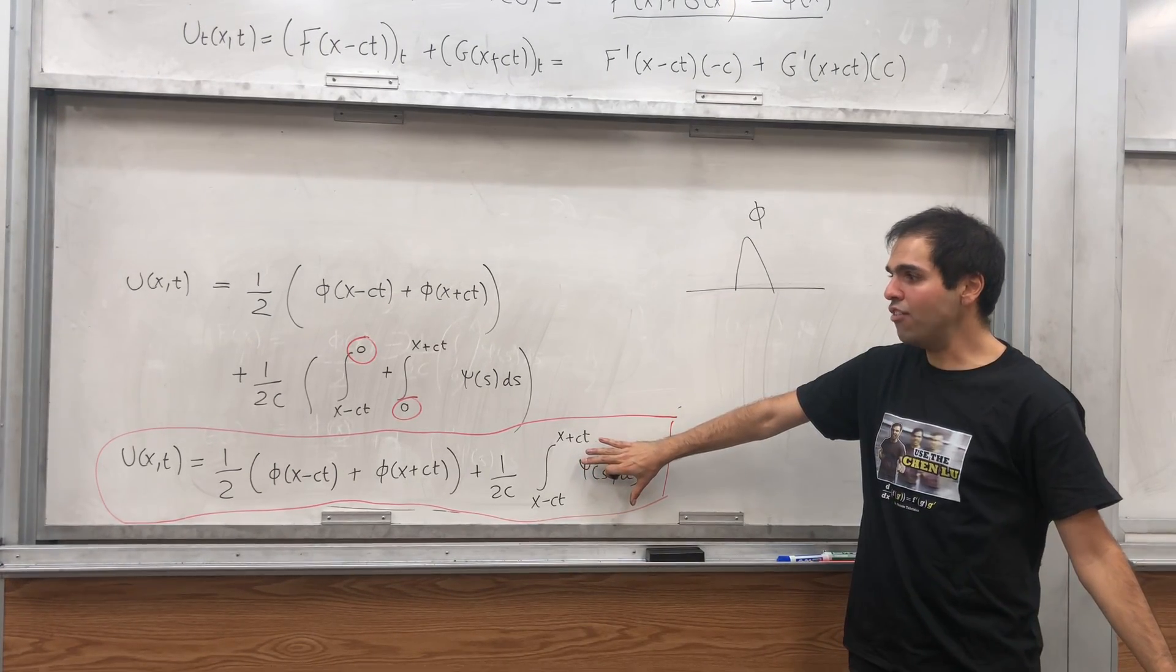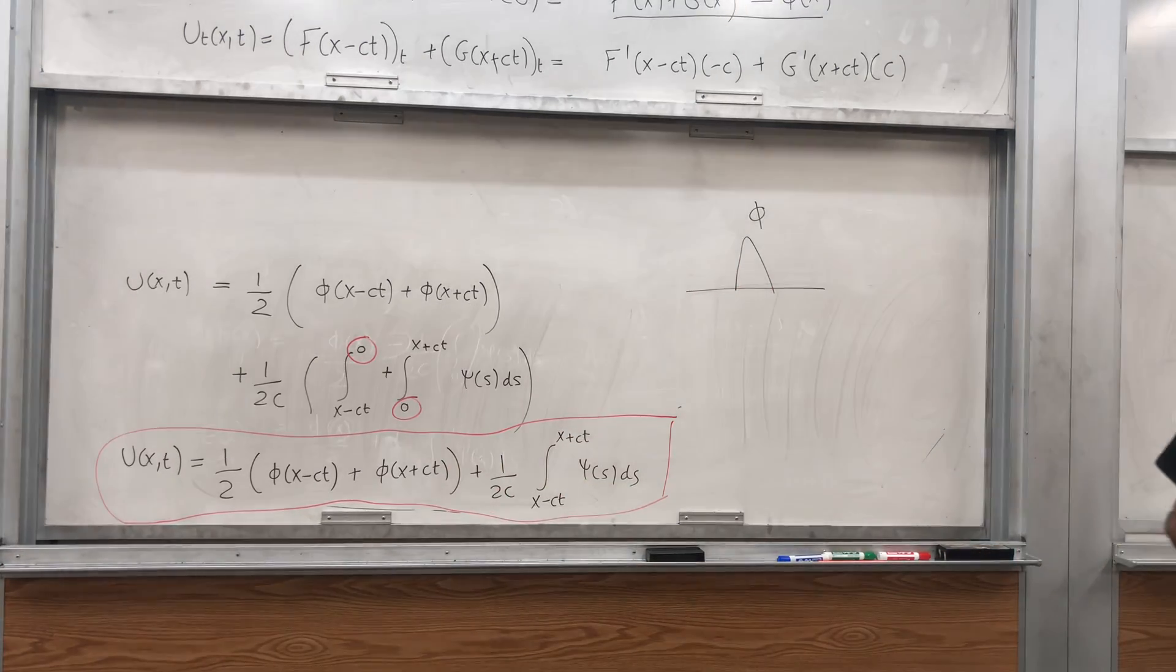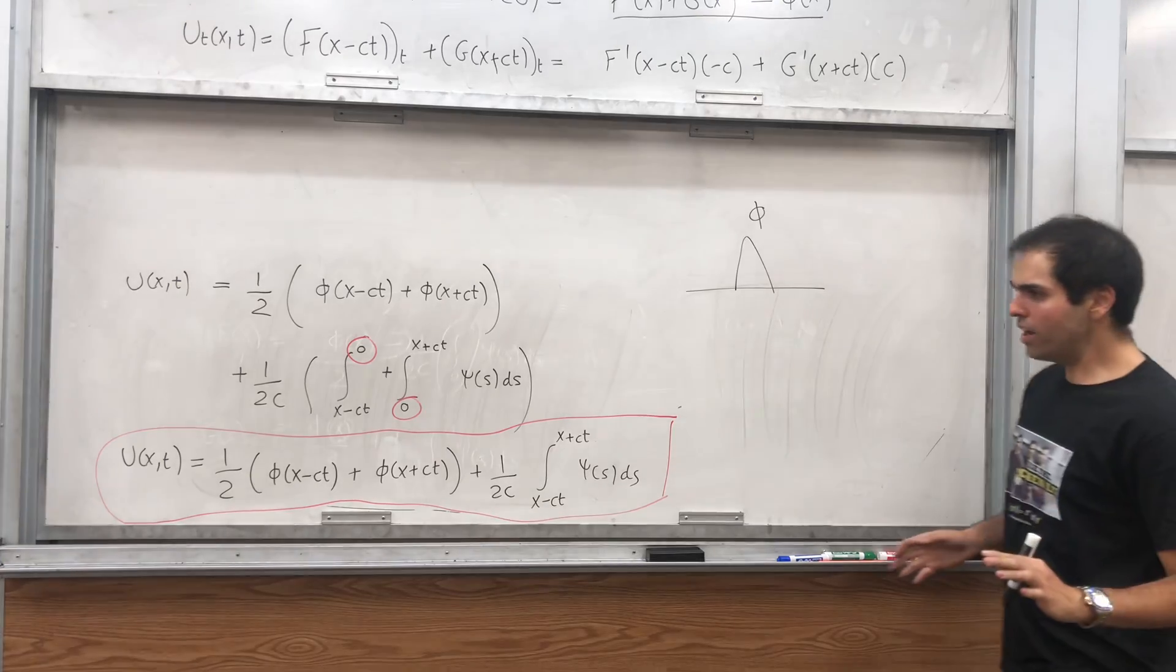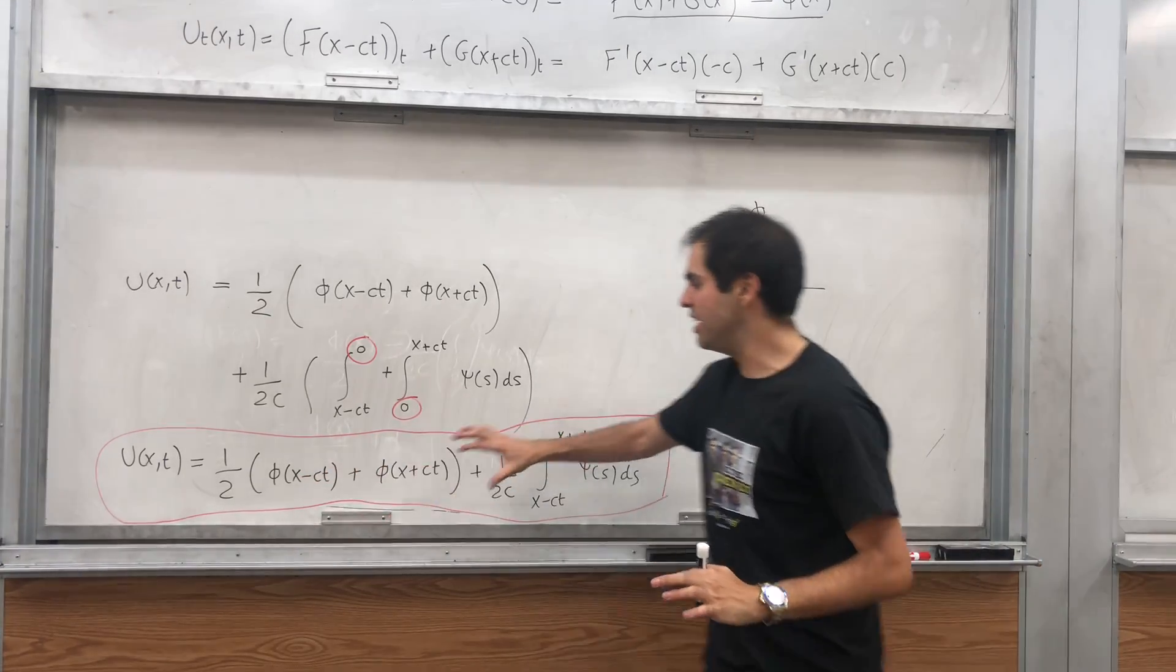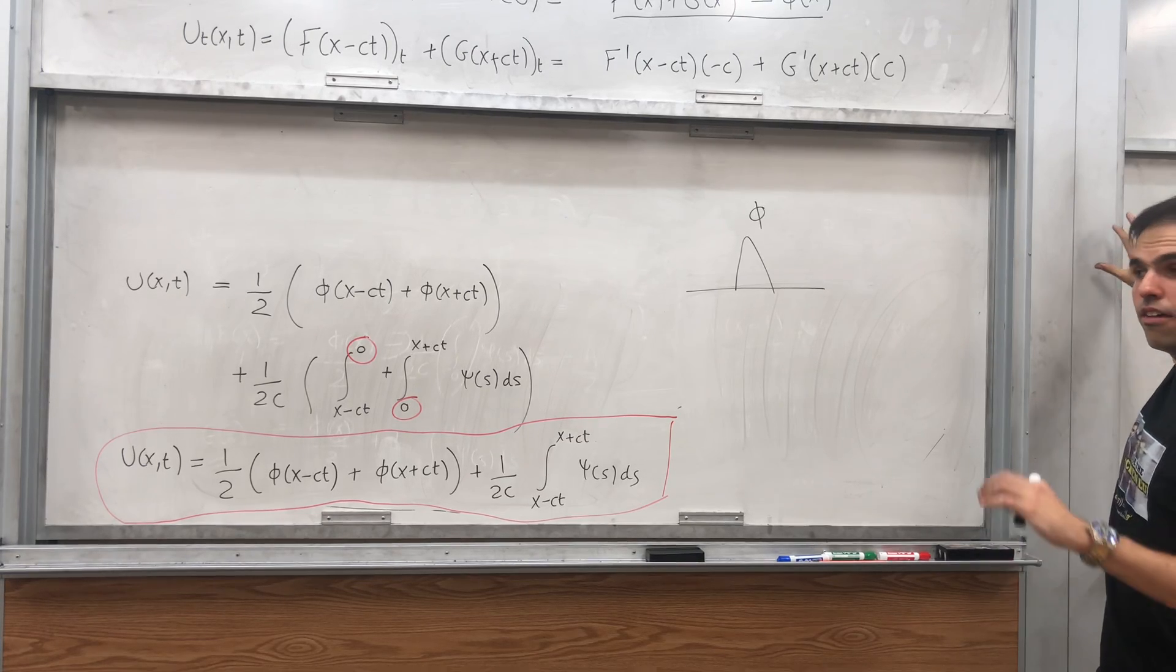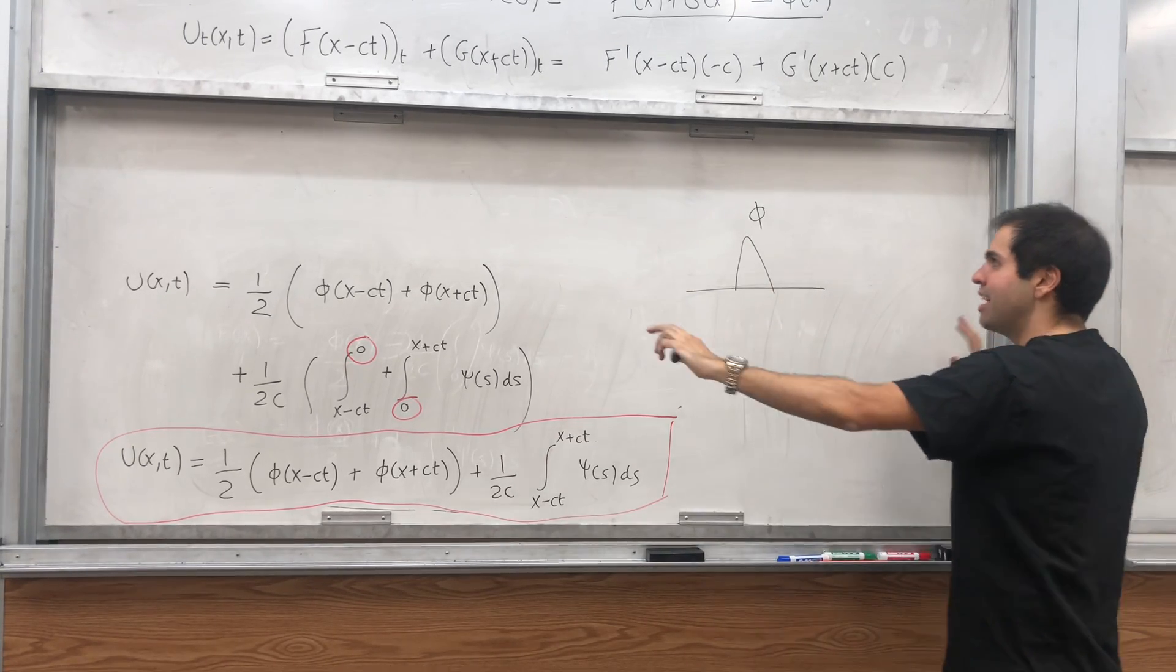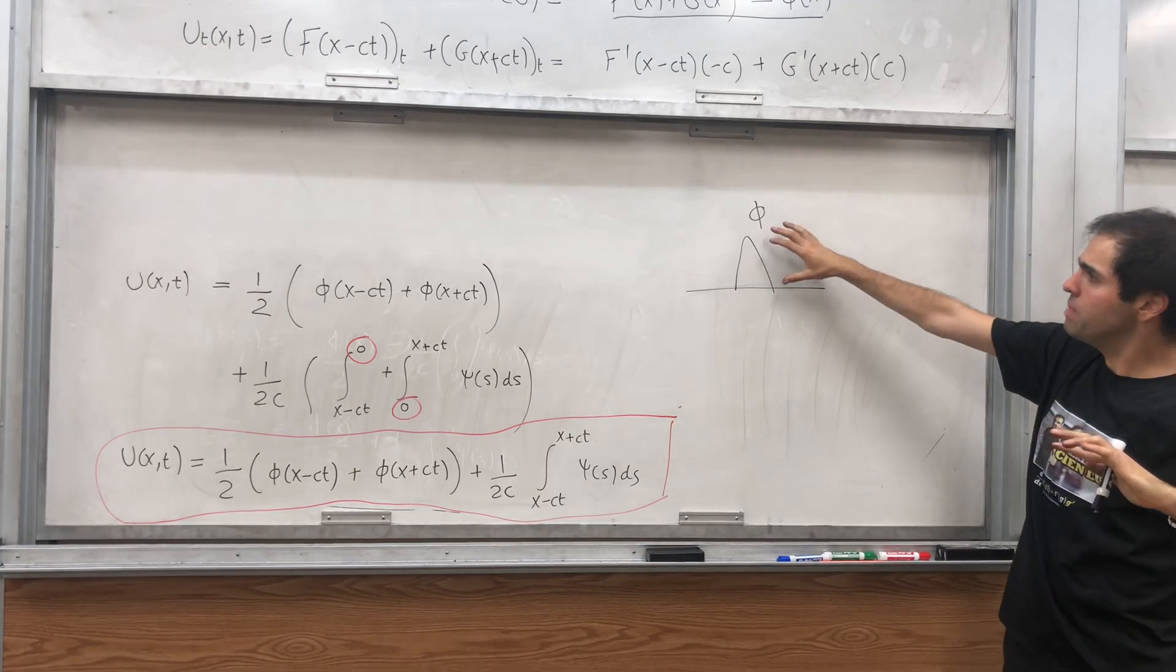Then the solution is one half of x minus ct plus x plus ct. What is this x minus ct? It's phi, but it travels to the right. Phi of x plus ct is phi, but it travels to the left.